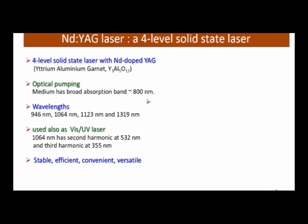Green at 532 nm is very important — it is used for eye surgery. You may have heard of Nd:YAG lasers used in hospitals for eye surgery, and the 532 nm line is mostly what is used. Each wavelength line has its own application. The fundamental is 1064 nm, the second harmonic is 532 nm, and the third harmonic is 355 nm. The Nd:YAG is a four-level laser system — very stable, very efficient, very convenient, and very versatile. Both continuous and pulsed operation are possible.